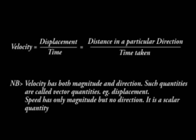Example is displacement. Speed has only magnitude and no direction. Such quantities are called scalar quantities. An example is distance as well.